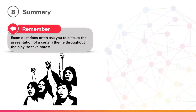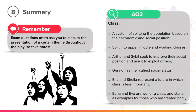Remember, exam questions often ask you to discuss the presentation of a certain theme throughout the play, so take notes. Class is a system of splitting up the population based on their economic and social position, split into upper, middle, and working classes. Arthur and Sybil seek to improve their social position and use it to exploit others. Gerald has the highest social status of all the characters. Eric and Sheila represent a future in which class is less important, and Edna and Eva are working class and stand as examples for those who are treated badly.